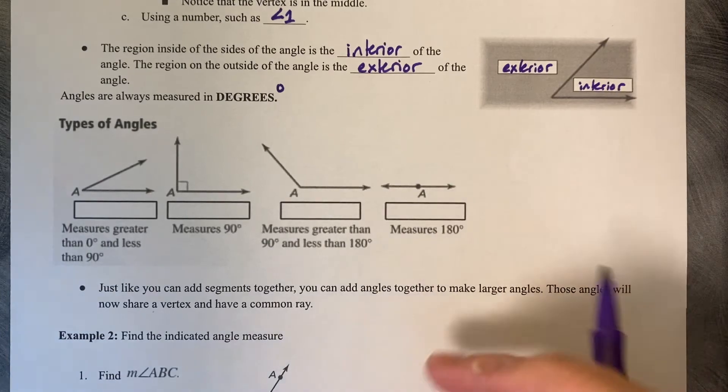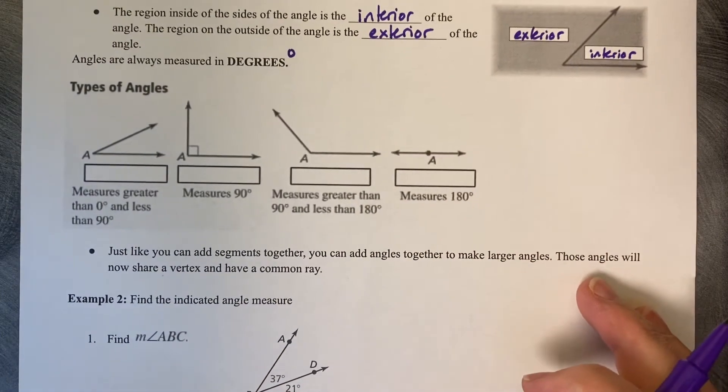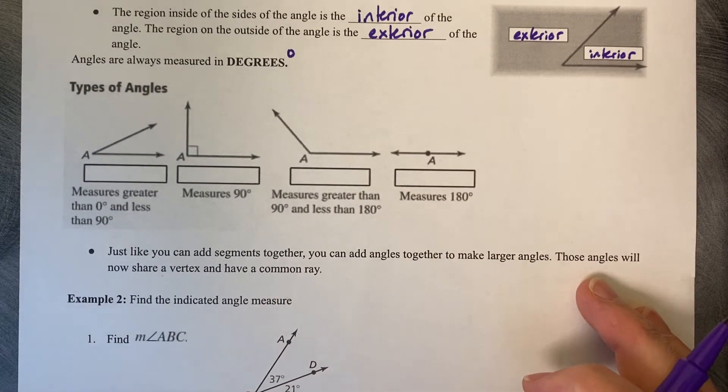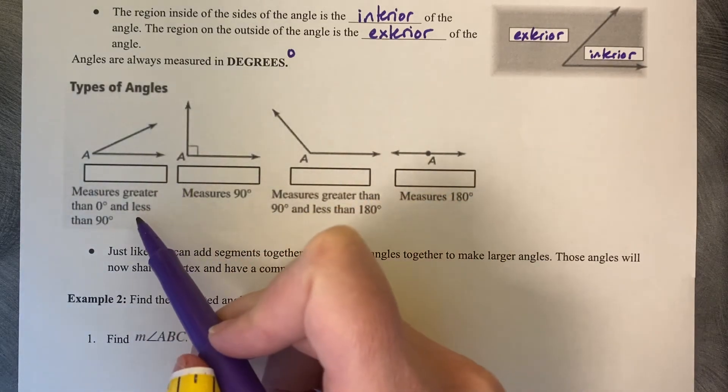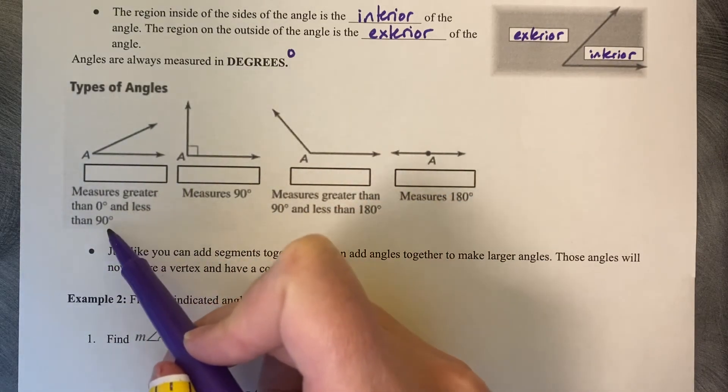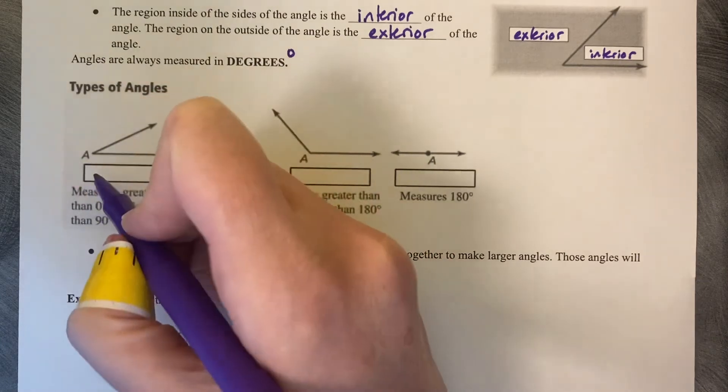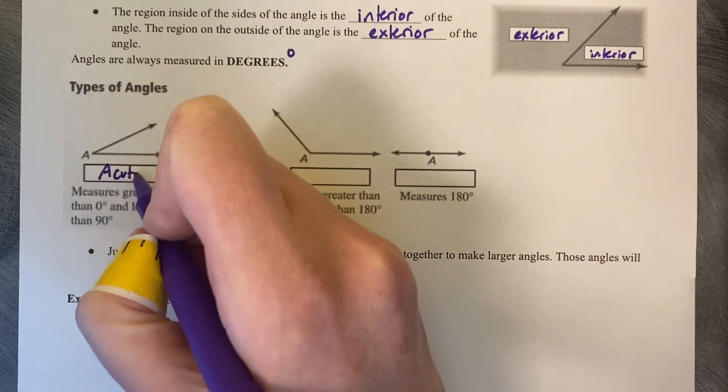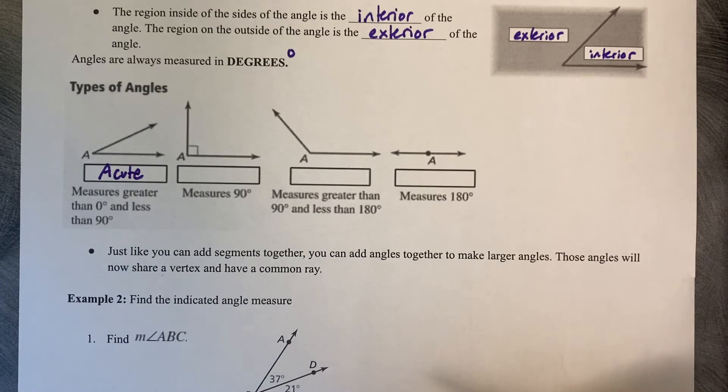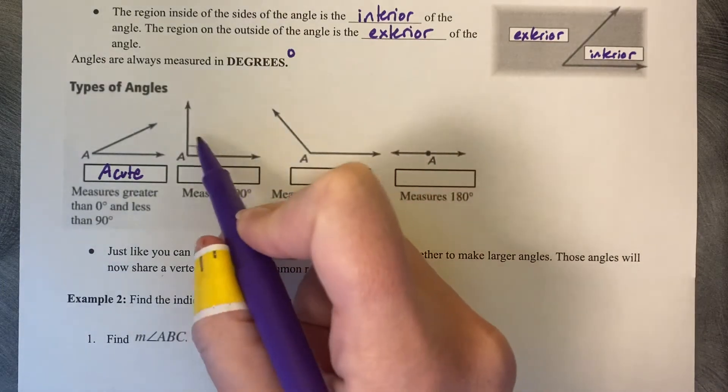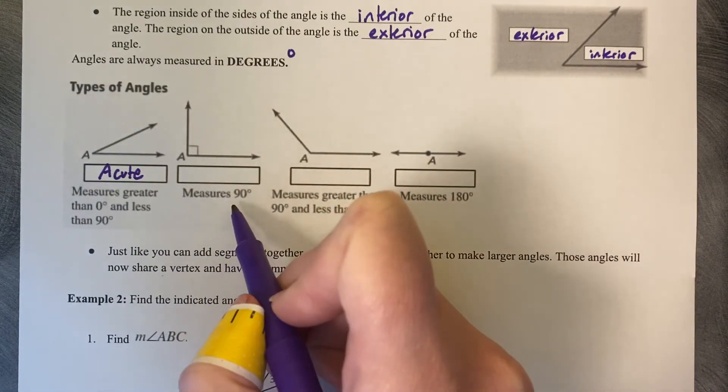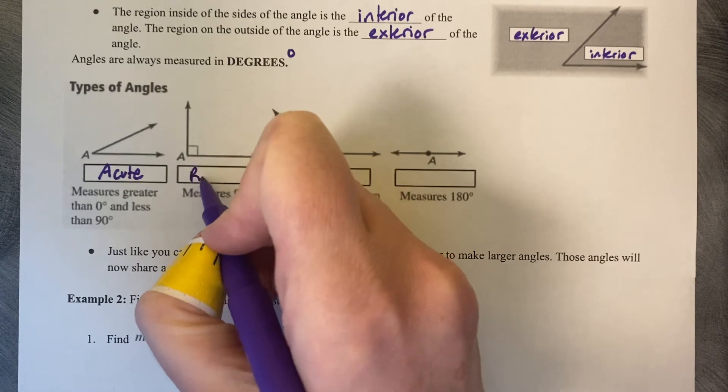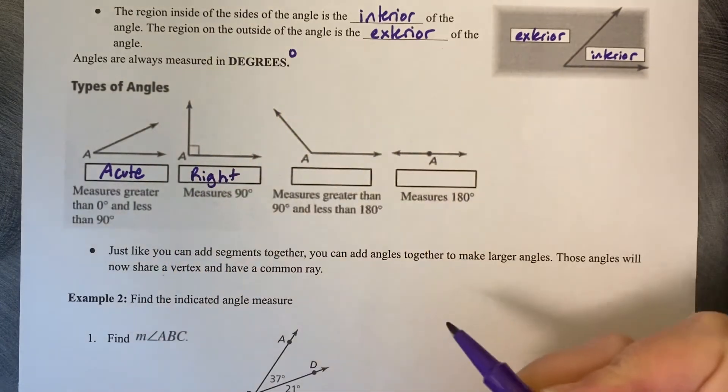Now there are four different types of angles that exist based on their size. So if you have one that measures greater than zero but less than 90, this is called an acute angle, less than 90 degrees. If you get a little bit larger and you measure exactly 90 degrees, this is called a right angle.